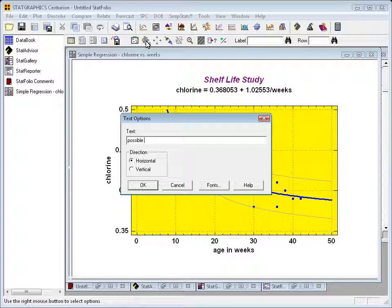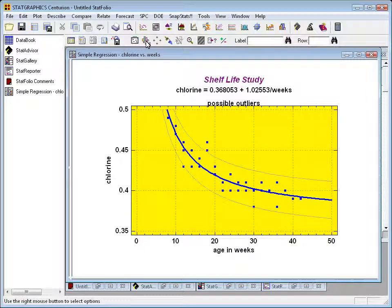For example, I'm going to type possible outliers, and press OK. Now, initially, this put the new text underneath the top title, but I'm just going to grab it with my mouse and drag it where I want it.